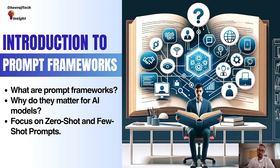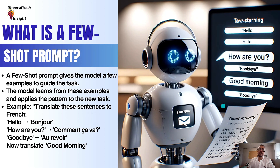Prompt frameworks are like instructions that help an AI model understand how to respond to your given task. Imagine giving a robot a clear recipe to follow so it can cook a meal or solve a mathematical equation for you. These frameworks are important because they help the AI understand what to do without getting confused — it's like giving directions to someone who has never been to a place before. Today we are going to focus on zero-shot and few-shot prompts.